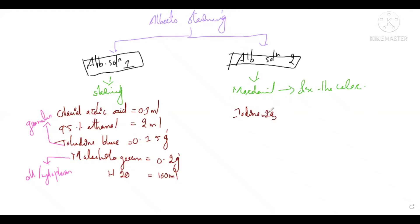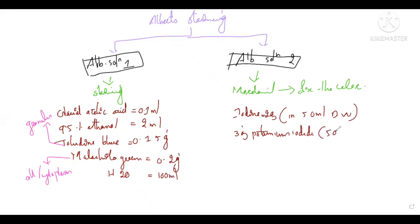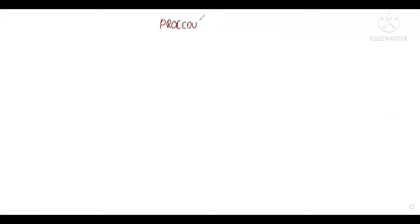Albert solution 2 contains: iodine 2 gram dissolved in 50 ml of distilled water, potassium iodide 3 gram dissolved in 50 ml of distilled water, then made up to 300 ml with the remaining 200 ml of distilled water. You can prepare according to your requirements.